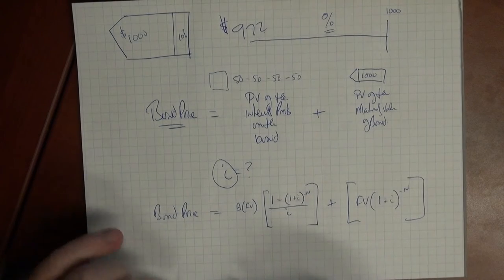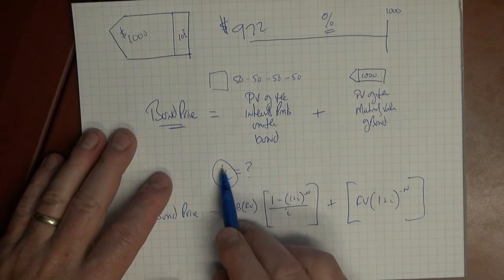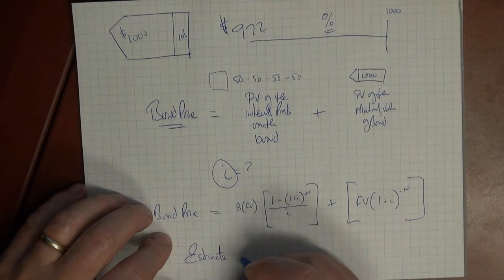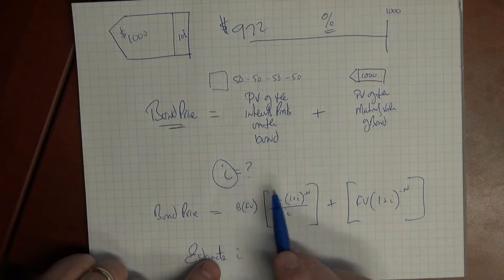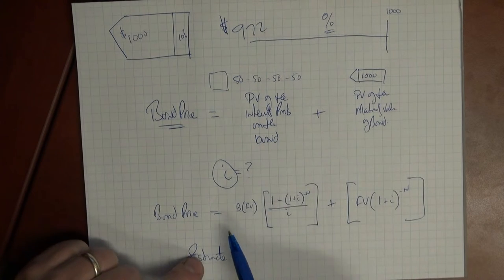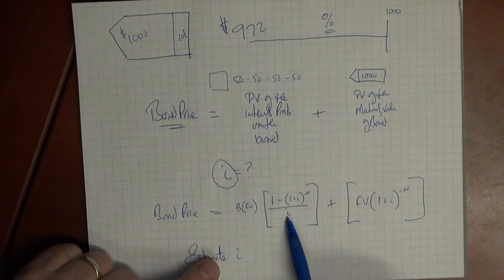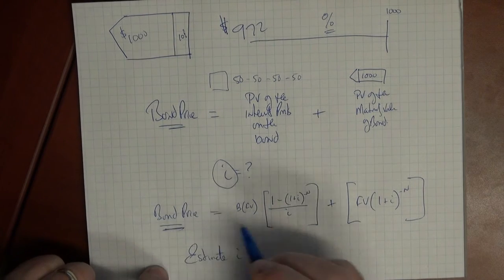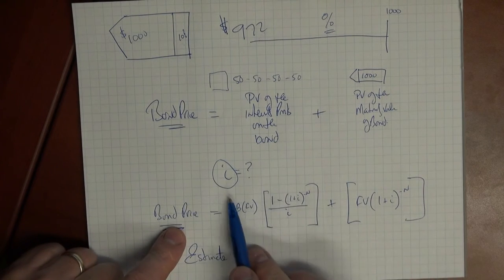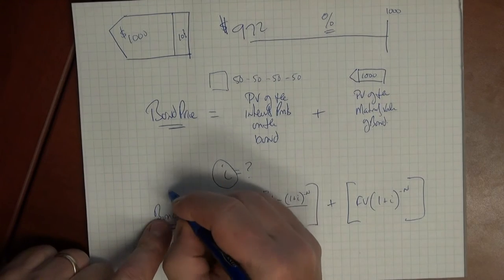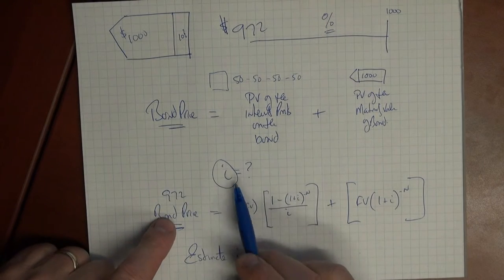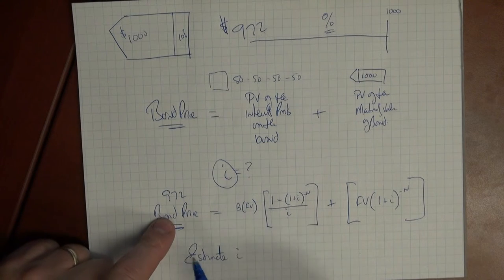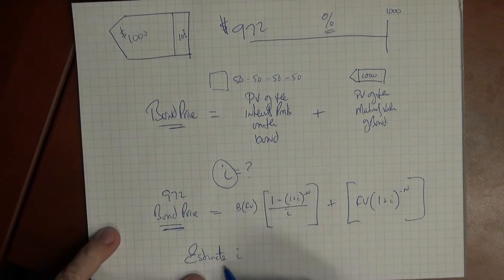What we need to do is we need to plug in numbers for i. We're going to estimate i. So we're going to say, 3%, 4%, whatever. And the idea is if we plug in an estimated number here, we know that when that estimated number gives a total here that equals the bond price, which in this case was 972, that is the effective yield to maturity.